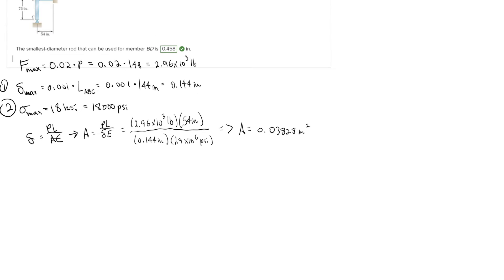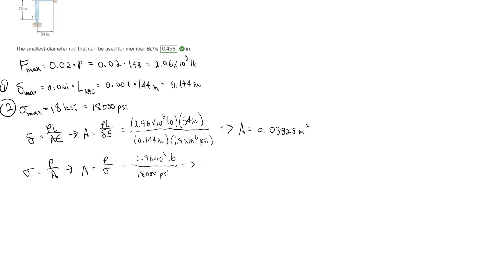That is one area. Now we solve for area using the second criterion: maximum normal stress. The normal stress formula is σ = P/A, rearranging gives A = P/σ. With P = 2.96×10³ pounds and maximum normal stress = 18,000 psi, solving gives A = 0.1644 in².